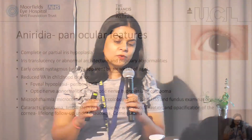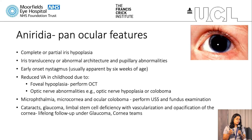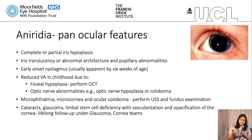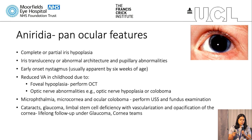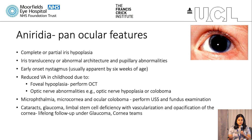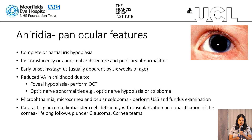With regard to aniridia, as mentioned yesterday, there are panocular features. Patients can present with complete or partial iris hypoplasia, iris translucency, abnormal architecture, and pupillary abnormalities. They will present with early-onset nystagmus, usually apparent from six weeks of age, and reduced visual acuity from childhood. They will have foveal hypoplasia to some degree, so it's important that we undertake OCT imaging to look at the extent to which the foveal architecture has been affected.